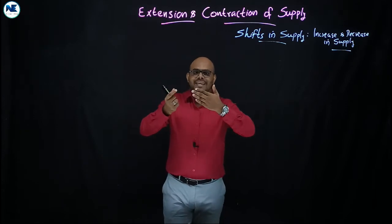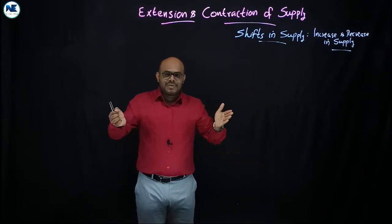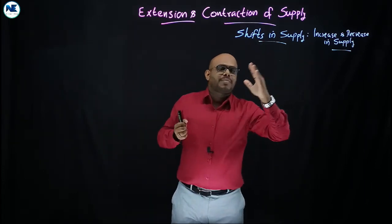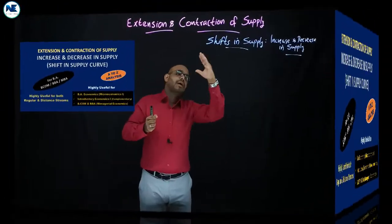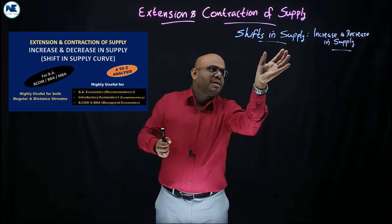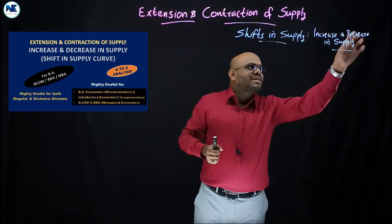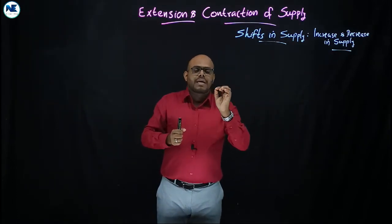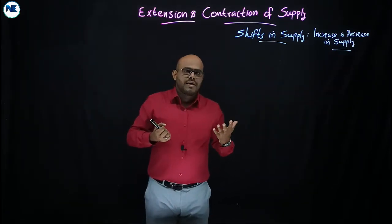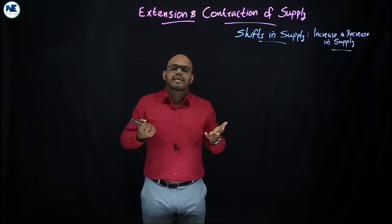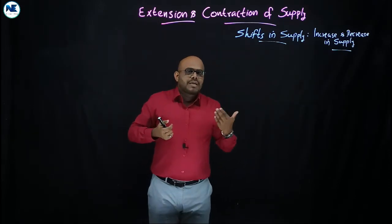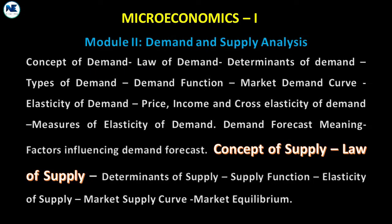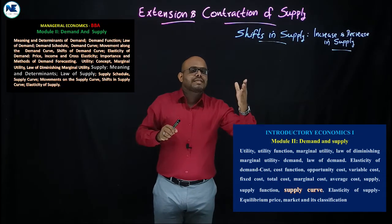Extension means expansion, increase. Contraction means decrease. Similarly, shift in supply means movement from one supply curve to a new supply curve. This new supply curve may happen in the case of increase in supply and similarly decrease in supply. So the main distinction is between movement along the supply curve versus a shift in the supply curve.